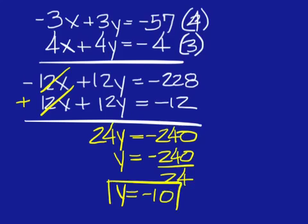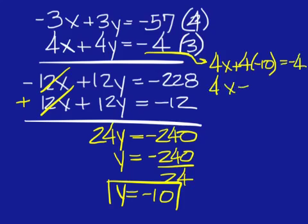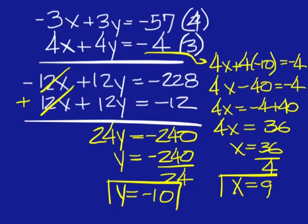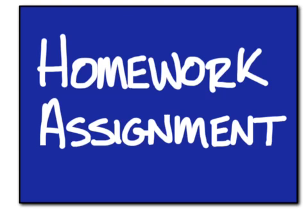Plug that back in to the top. I'll choose the second equation. And that will be 4x plus 4 times negative 10 equals negative 4. Simplify, and then move to the right side. Change the operation. Simplify again. Divide. Get an answer of 9 for x. 9 negative 10 is the final answer. Thank you.